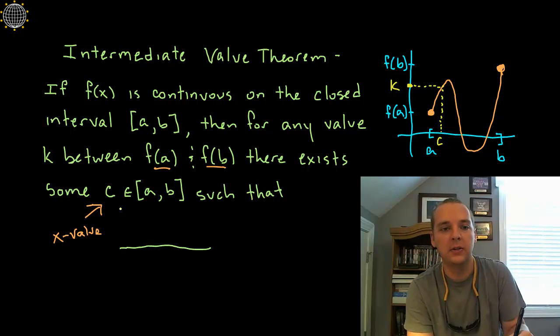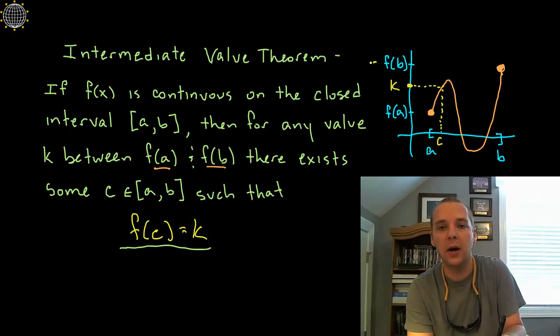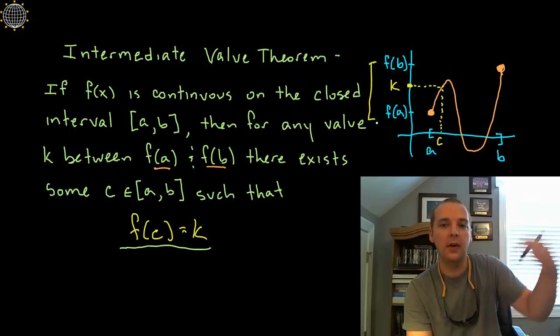So let's look at the punchline here. There is some value c such that, here we go, f(c) will give you that k, regardless of any y value between f(a) and f(b).